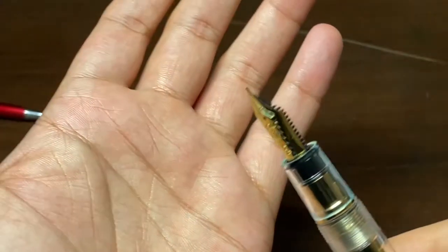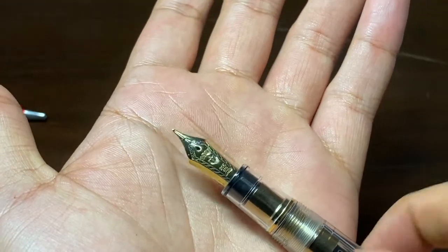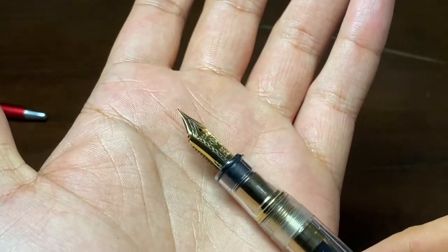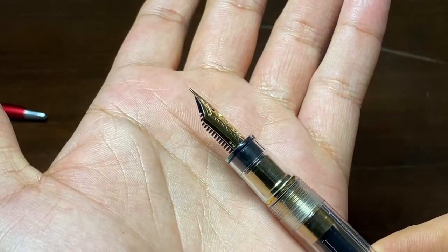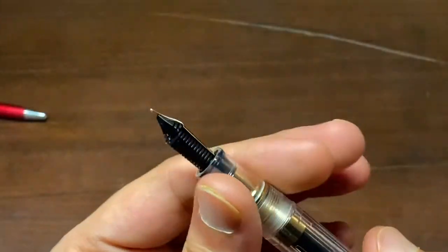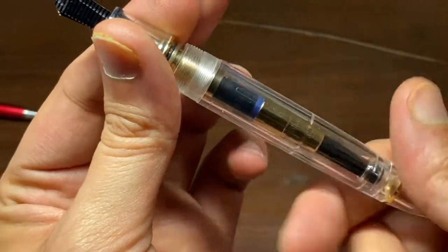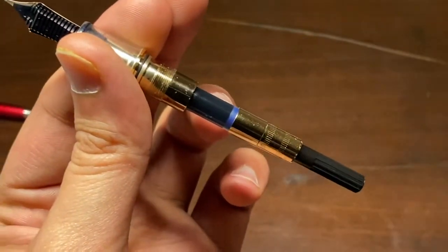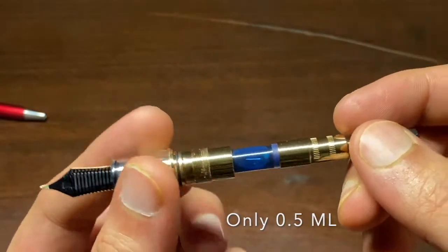This nib is beautiful as it is a 21 karat nib and the only 21 karat nib I have in my collection. This is a hard medium. You can see it's a converter. Once I take this out, this is the basic cartridge converter that comes from Sailor, already loaded with some ink.